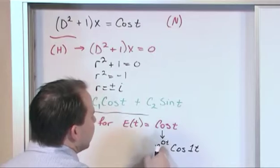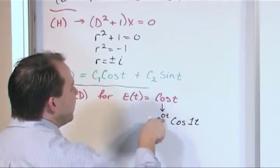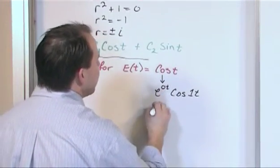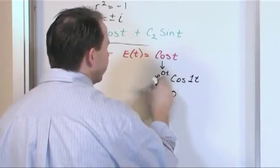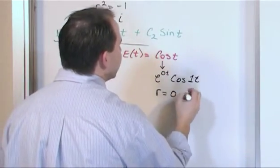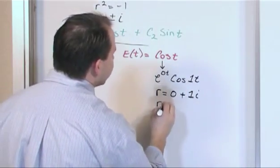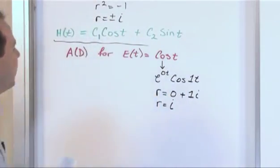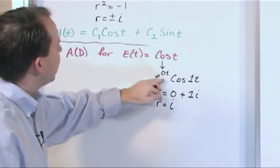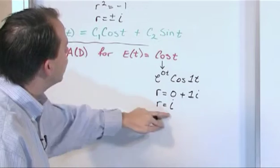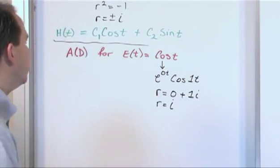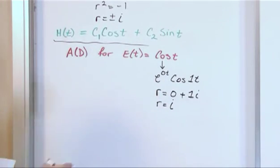So in other words since the real part, since what's in this exponent is 0 then that means that r is going to be 0 from the real part plus 1i, or in other words r is going to equal i. So it's basically going backwards, it's like looking at this, figuring out what we have and working backwards and say well a root of i would yield a solution of that guy of cosine t.